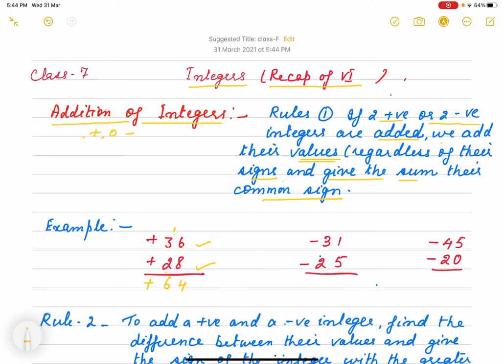Now same way, second question. If I have -31 and -25, they are negative integers. So what do we do? We add them without considering the sign. 1 plus 5 is 6, 3 plus 2 is 5. Now we've added. Why do we add even though they're negative integers?